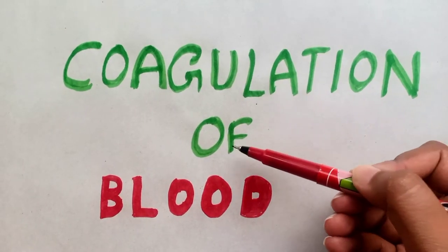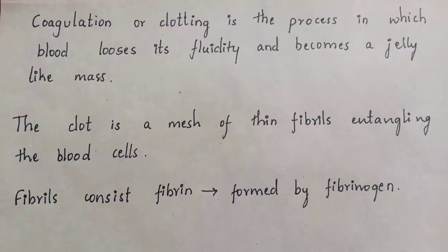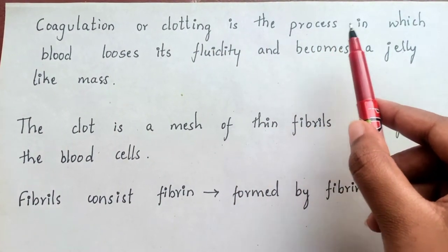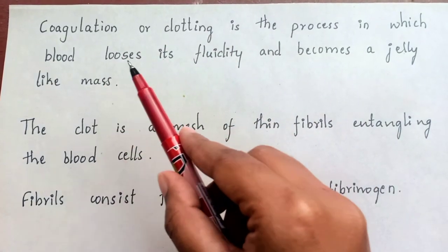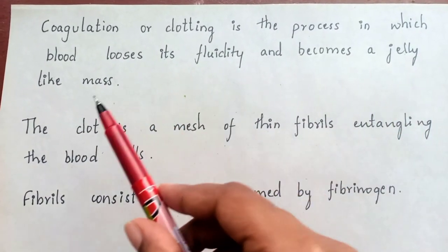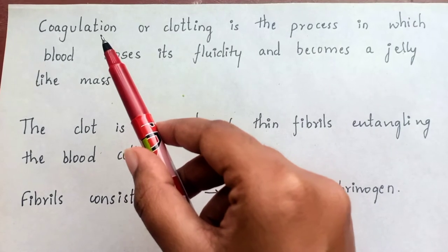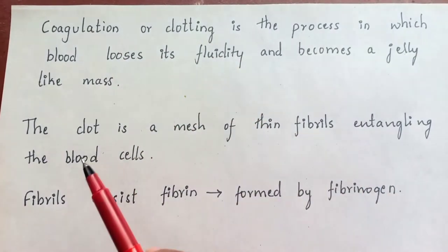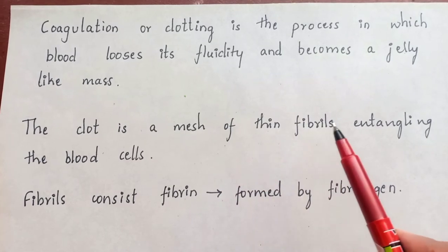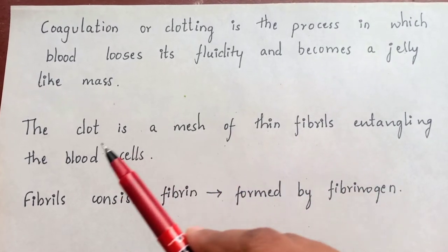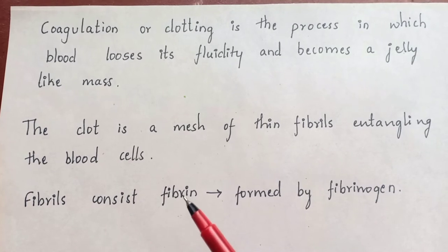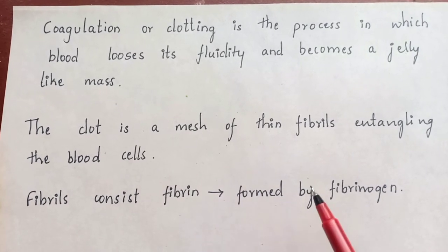Coagulation of blood: Coagulation or clotting is the process in which blood loses its fluidity and becomes a jelly-like mass. Basically, coagulation is nothing but clotting. A clot is a mesh of thin fibrils entangling the blood cells, where the fibrils consist of fibrin, which is formed by fibrinogen.